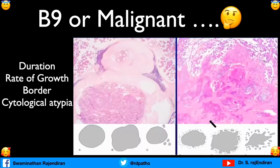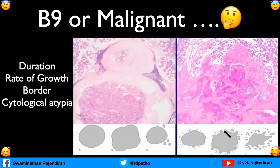Benign or malignant — that is the very important question we have to answer. To help answer it, we look at duration of the tumor (longer duration suggests benign), rate of growth (rapid growth suggests malignant), and border. The picture tells you: a smooth or lobulated, nodular, circumscribed border with non-invasive nodules outside is characteristic of benign. In malignancy, the border becomes irregular. I put it this way: close your fingers into a fist — that is benign; but extend the fingers and they are infiltrating. This picture is worth a lot because it shows the main difference between benign and malignant salivary gland tumors.